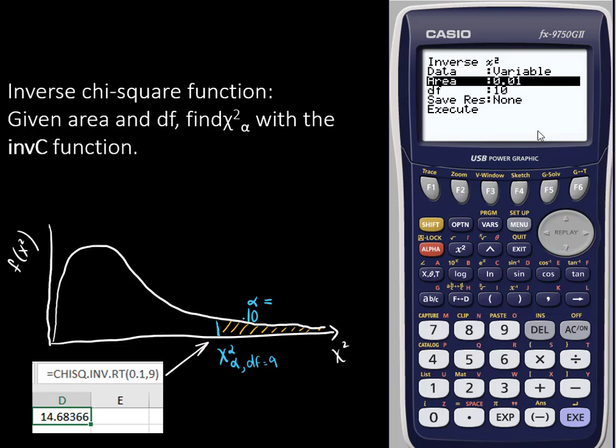We're going to enter area to the right of the chi-square value we're trying to find. In this example we're looking for the chi-square alpha which has 10% of area to the right of it and degrees of freedom of 9.